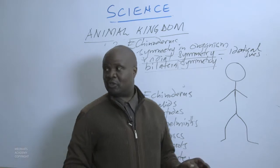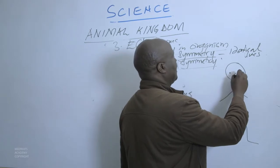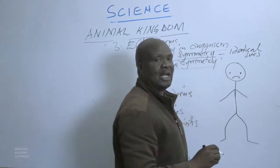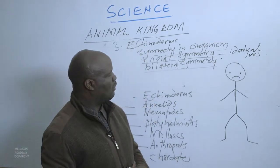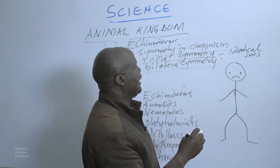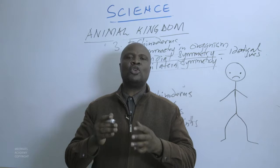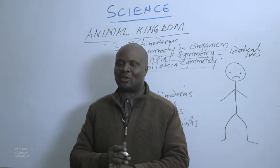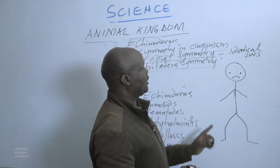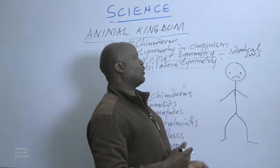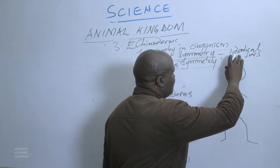This is a caricature of a human being. When we talk of bilateral symmetry, there is only one way we can subdivide a human being into two equal halves that are identical and replica to each other — no two ways. That's why we say it is bilateral. A human being qualifies as a bilateral organism.